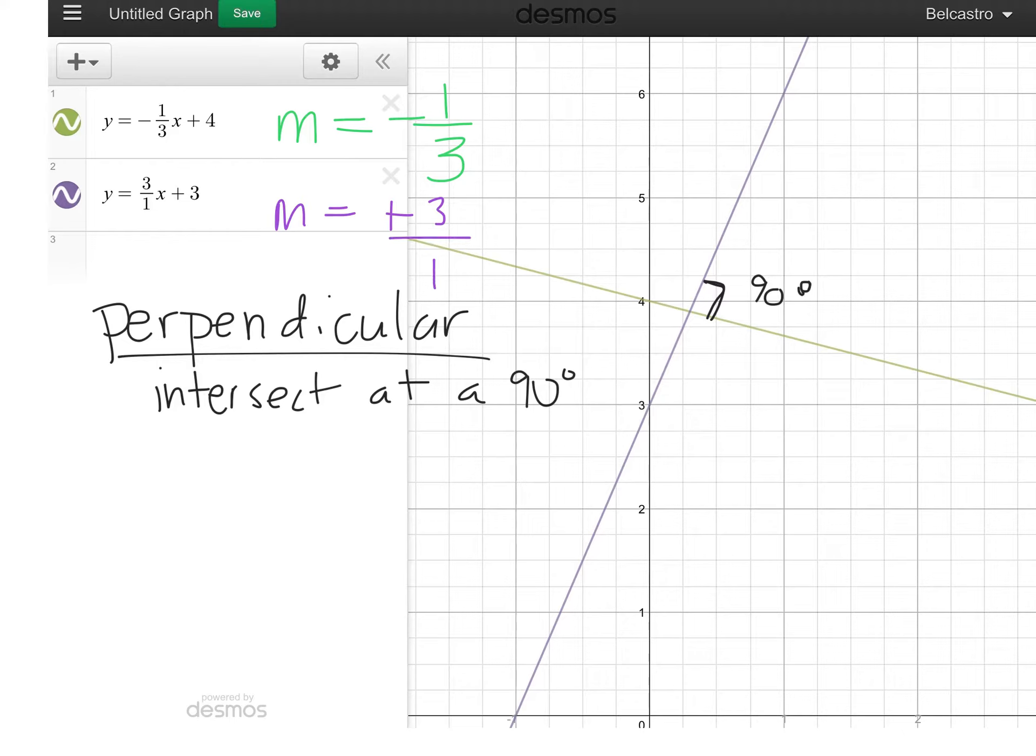What do you notice about their slopes? They're negative reciprocals. What does that mean?